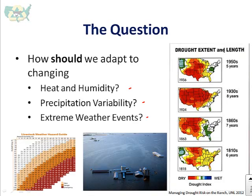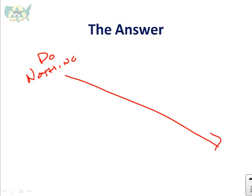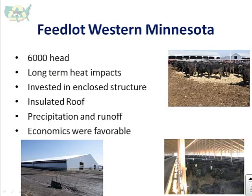How should we adapt to a changing climate? The answer ranges from nothing — do nothing — all the way across the board to some very significant changes that could be made on the feedlot or livestock production system. Some people, like you saw in the Iowa Beef report, added shade structures — a fairly economical way of responding or adapting to climate change.